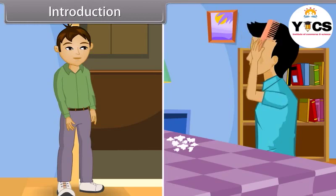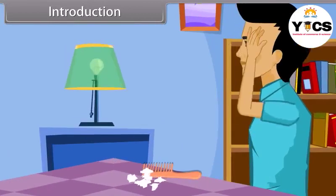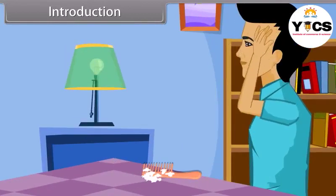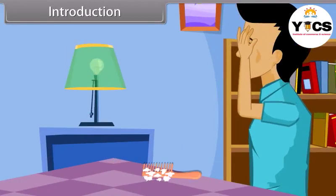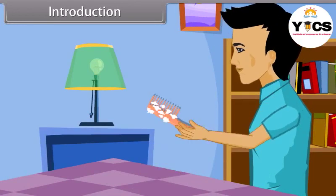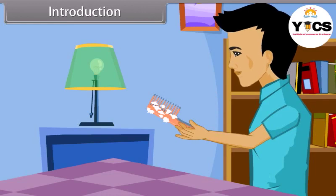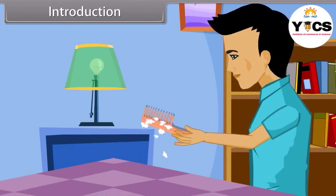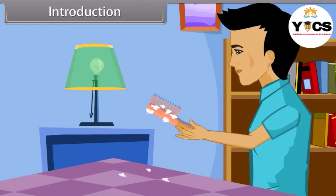Amit is combing his hair. After combing, when he puts the comb on the table and again picks it up, he gets surprised. He observes that some pieces of paper are stuck to the comb. He shakes the comb well, but only a few fall down while others are still stuck to it.